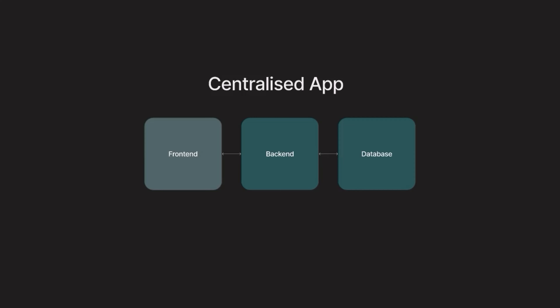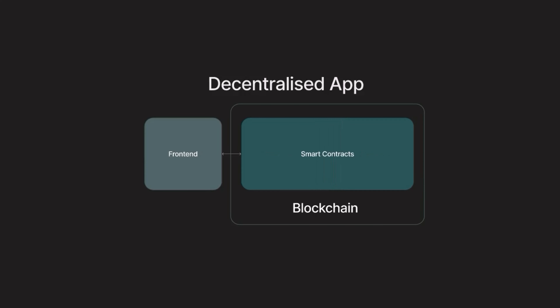So how is a DApp different from a centralized application? In a regular application such as Facebook or YouTube, we have a frontend that is integrated with the backend. The backend contains the business logic and the database, and it's usually hosted on the cloud. In a decentralized application, however, our backend is running on the blockchain. What it means is that the backend logic is typically implemented using smart contracts. Smart contracts are programs that are stored and run on the blockchain.